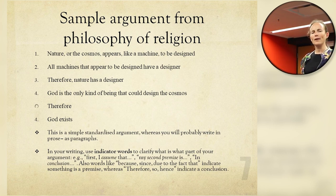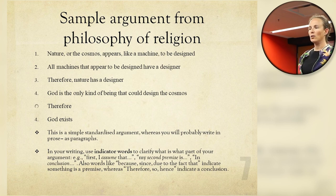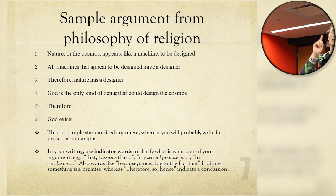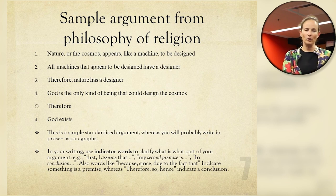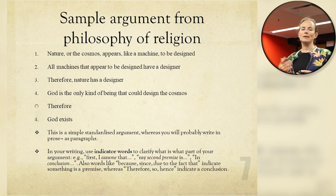Sometimes it can help to write an argument in standardized form. When writing an argument, you might want to use indicator words to make it clear which part of the argument is which. You might say something like, 'first, I assume this,' or 'my second premise is that,' or 'here is my conclusion.' You might instead use indicator words like therefore, hence, or so to suggest that something is a conclusion, and words like because, since, and due to the fact that to indicate something is evidence or a premise.